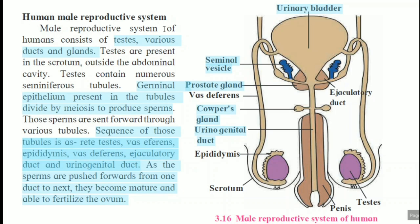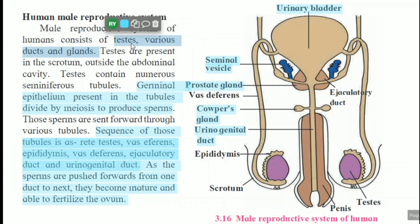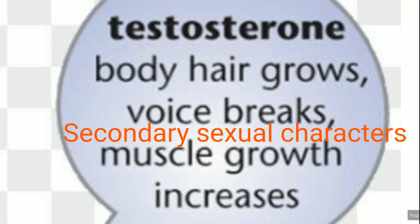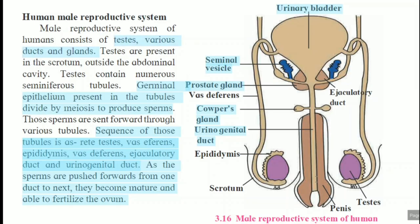The male reproductive system of humans consists of testis, various ducts, and glands. Testis is a gland present in males, and it secretes the hormone testosterone. That hormone controls the secondary sexual characters in males. Various ducts are passages through which secretions pass, and glands also secrete their hormones.